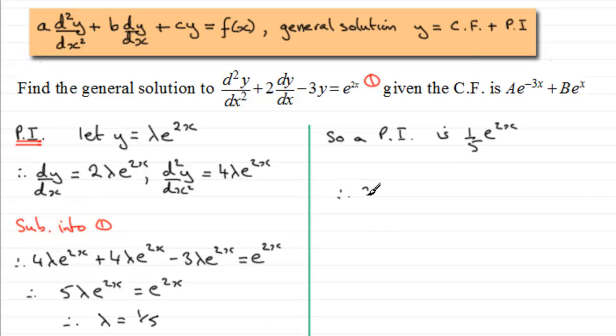Therefore, when it comes to the general solution, the general solution is our complementary function, which is ae to the power minus 3x plus be to the power x, and then plus our particular integral, plus 1 fifth e to the power 2x.